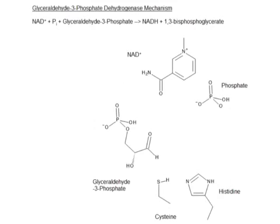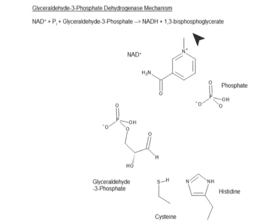GAP dehydrogenase is one of the first enzymes in glycolysis where we are able to pay off the initial investment of energy we invested earlier in glycolysis. Glyceraldehyde-3-phosphate, the product of our triose phosphate and aldolase, is going to be reacted with NAD and phosphate to give us NADH — which is worth around 3 ATP — and 1,3-bisphosphoglycerate, which has an acyl phosphate group we'll cash in in the next step for ATP.